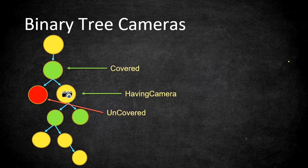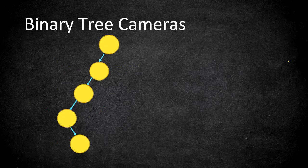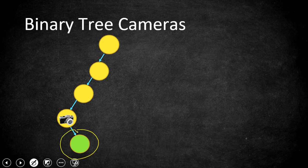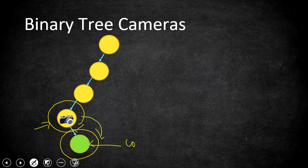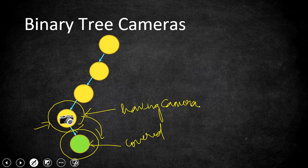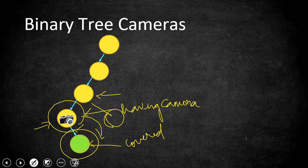Based on these statuses we fill nodes with cameras going upward. Let's do a quick dry run using the example from the problem statement. As our DFS goes deep to the leaf node first, it checks whether the leaf node is reached, then fixes the camera at its parent. The leaf node's status becomes covered, and the node where we kept the camera has status having camera. Moving one node upward, the parent checks if either child has a camera — if so, it is covered.